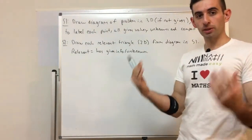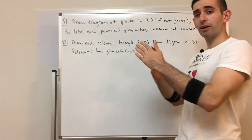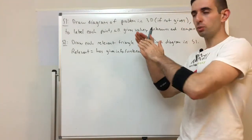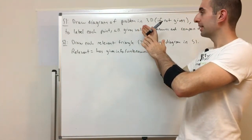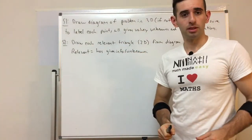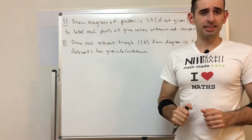So this is the trick for 3D trig. 3D trig problems are tricky and very hard to visualize. So what you do once you have your diagram, if they don't give it to you, is convert it to a 2D problem because 2D problems are much easier to solve.